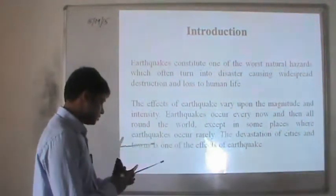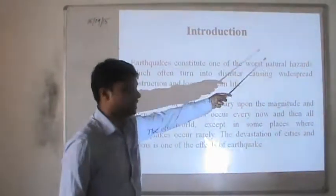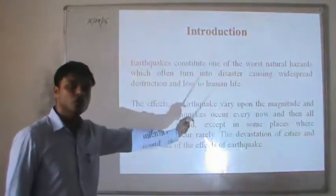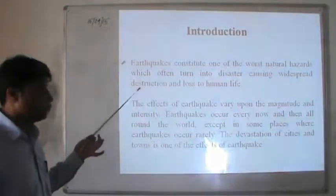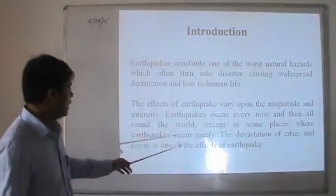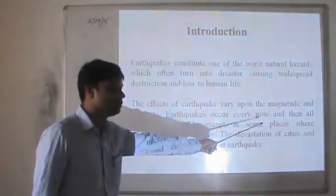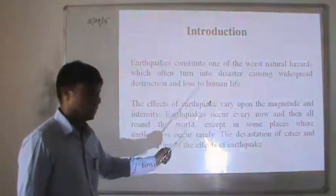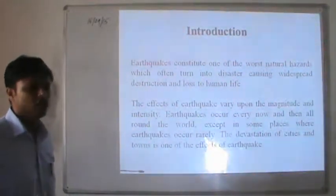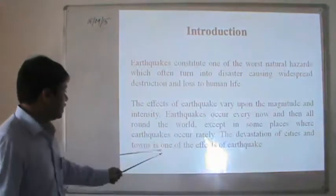The next topic is earthquake. Earthquakes constitute one of the worst natural hazards, often turning into disasters causing widespread destruction and loss of human life. The effects of earthquake vary based on its magnitude and intensity. Earthquakes occur all around the world except in some places where they are rare, such as India's Zone 2, which is the safest zone.